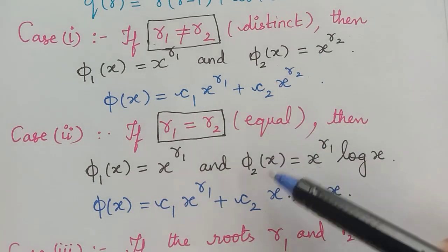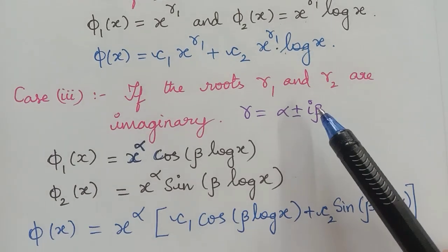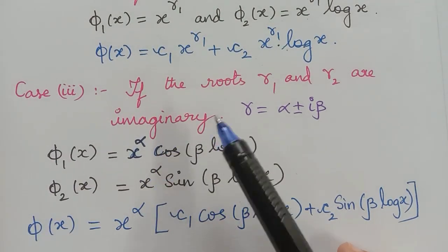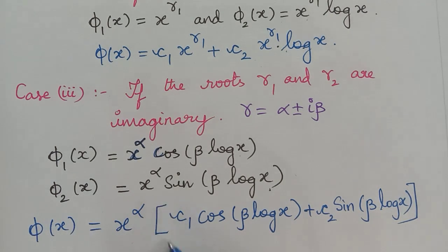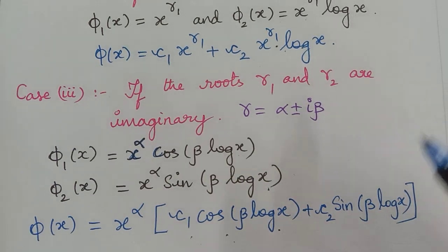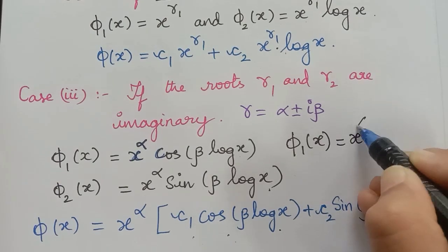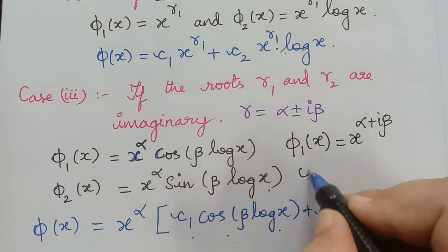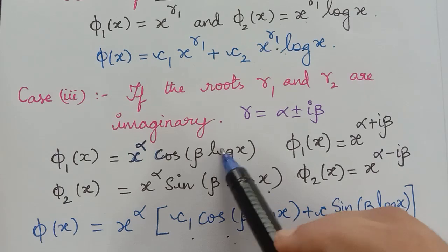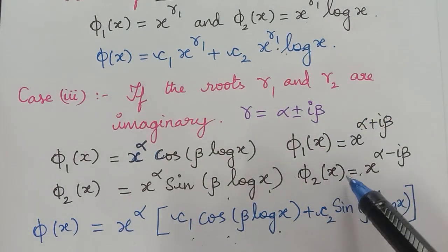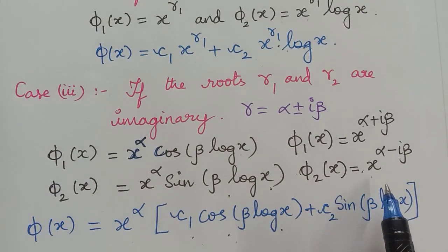You may look into that theorem and understand it better. Now, if the roots are imaginary, that is of the form alpha plus or minus i beta, the solutions will be phi 1 of x equal to x power alpha cos(beta log x) and phi 2 of x equal to x power alpha sin(beta log x). In general, phi of x equals x power alpha multiplied with c1 cos(beta log x) plus c2 sin(beta log x). We can also write the solutions as phi 1 of x equal to x to the power alpha plus i beta and phi 2 of x equal to x to the power alpha minus i beta, giving general solution c1 x power alpha plus i beta plus c2 x power alpha minus i beta.